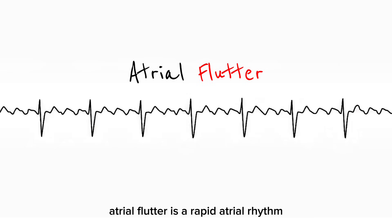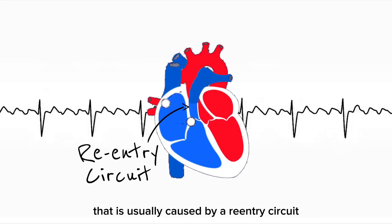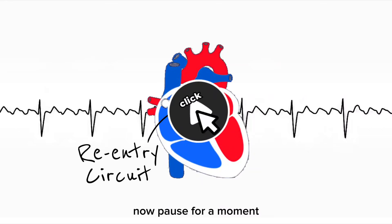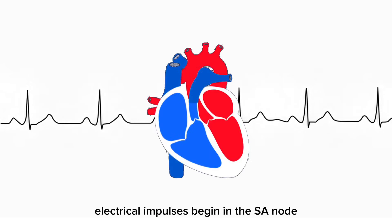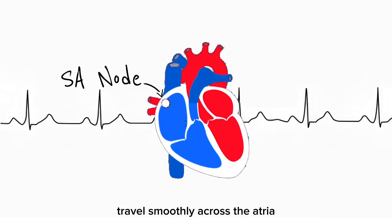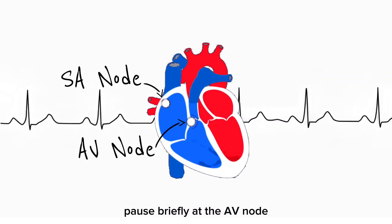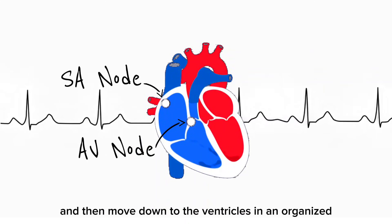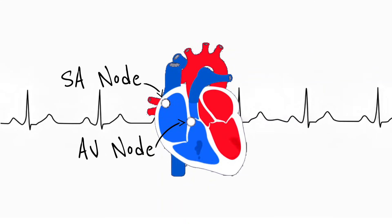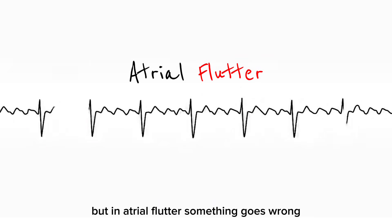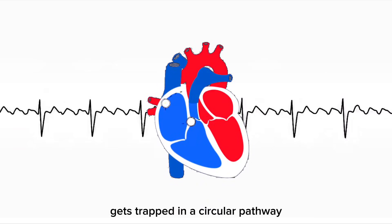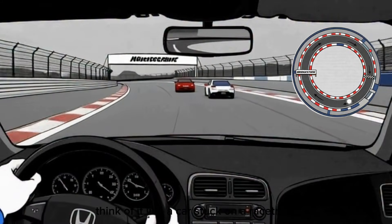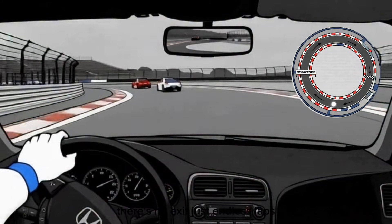Atrial flutter is a rapid atrial rhythm usually caused by a re-entry circuit within the atria. This idea of re-entry is extremely important. In a normal heart rhythm, electrical impulses begin in the SA node, travel smoothly across the atria, pause briefly at the AV node, and then move down to the ventricles in an organized one-way fashion. But in atrial flutter, instead of moving forward and stopping, the electrical impulse gets trapped in a circular pathway — it loops over and over again, continuously activating the atria. Think of it like a car stuck on a racetrack: there's no exit, just endless laps.